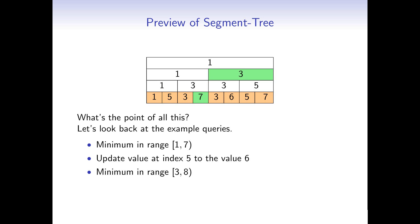Basically, instead of iterating over nodes in the last layer of the tree, we iterate over nodes in higher layers, because their values contain the minimum of ranges rather than a single element. As we go higher, the nodes get more and more powerful. However, we can't simply shift the entire array to a higher layer — as shown in the example, there isn't a single node containing range 3 to 8, so we have to handle edge cases at the borders. On larger arrays this effect is enormous: to compute the minimum over 1 million values, you need fewer than 40 lookups in the tree instead of a million.